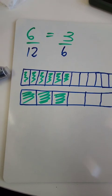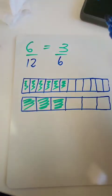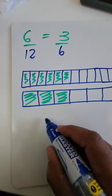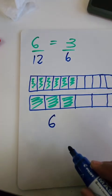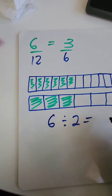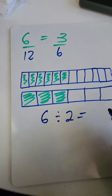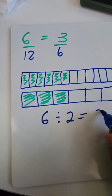So, to get from 6 to 3, we need to say 6 divided by 2. So, 6 divided by 2 will give us 3.